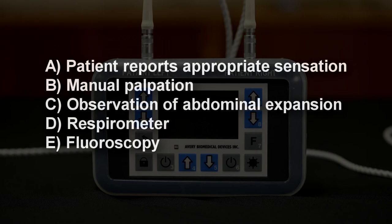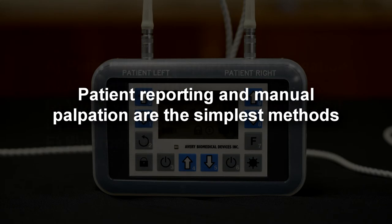A. Patient reports appropriate sensation. B. Manual palpation. C. Observation of abdominal expansion. D. Respirometer. E. Fluoroscopy. Patient reporting and manual palpation are the simplest methods.